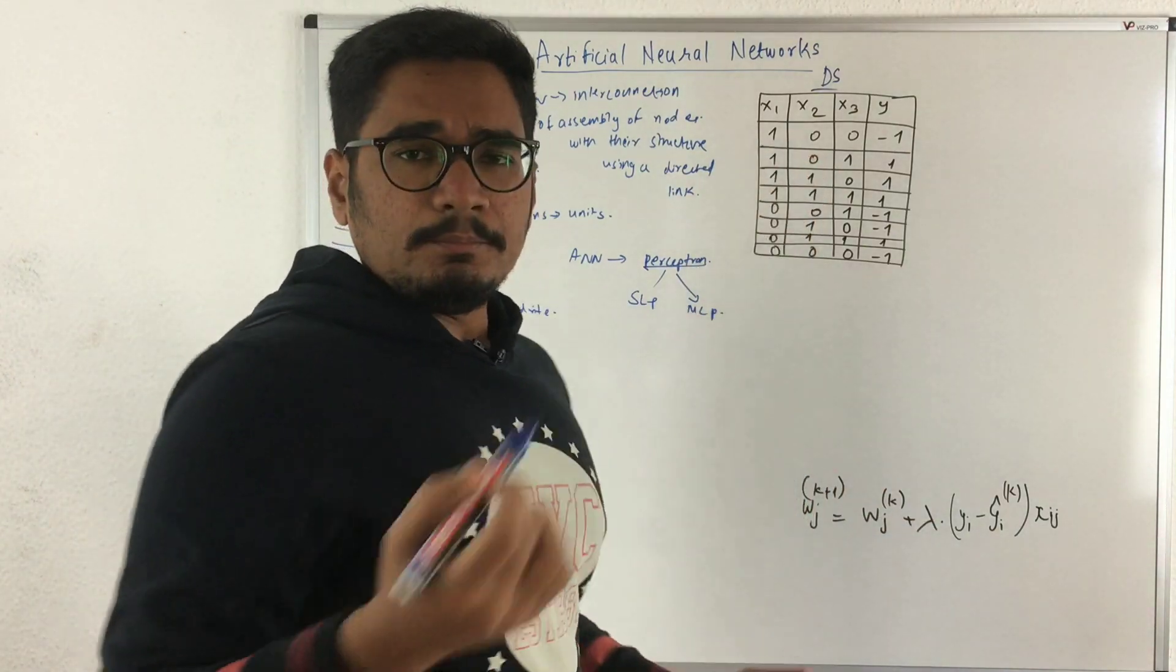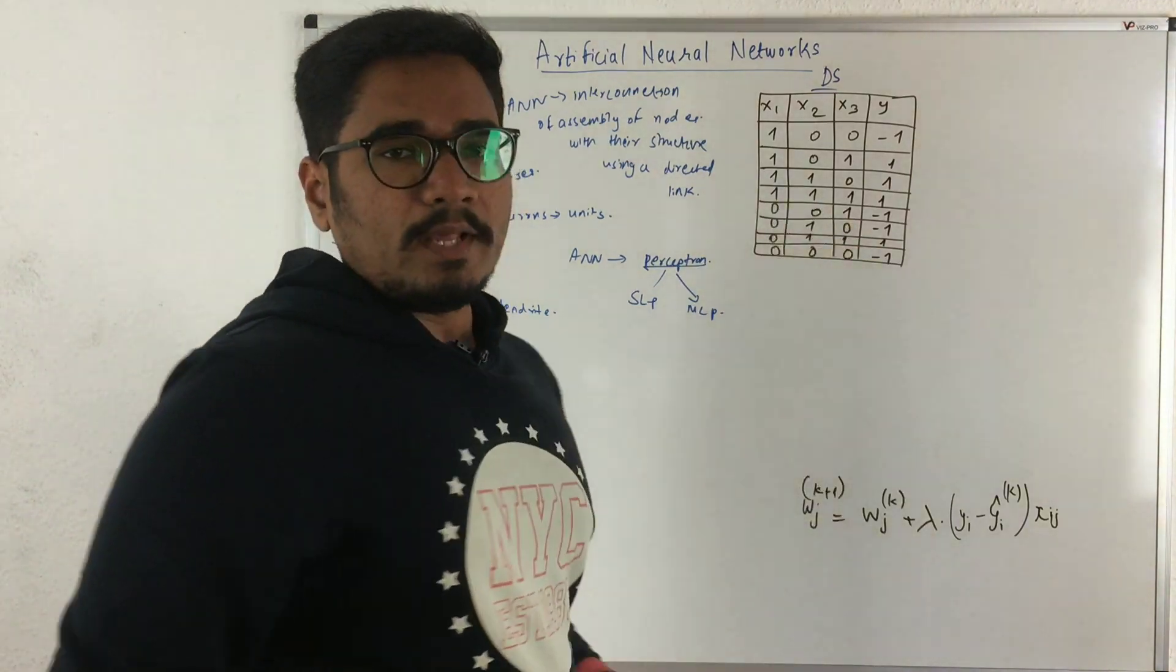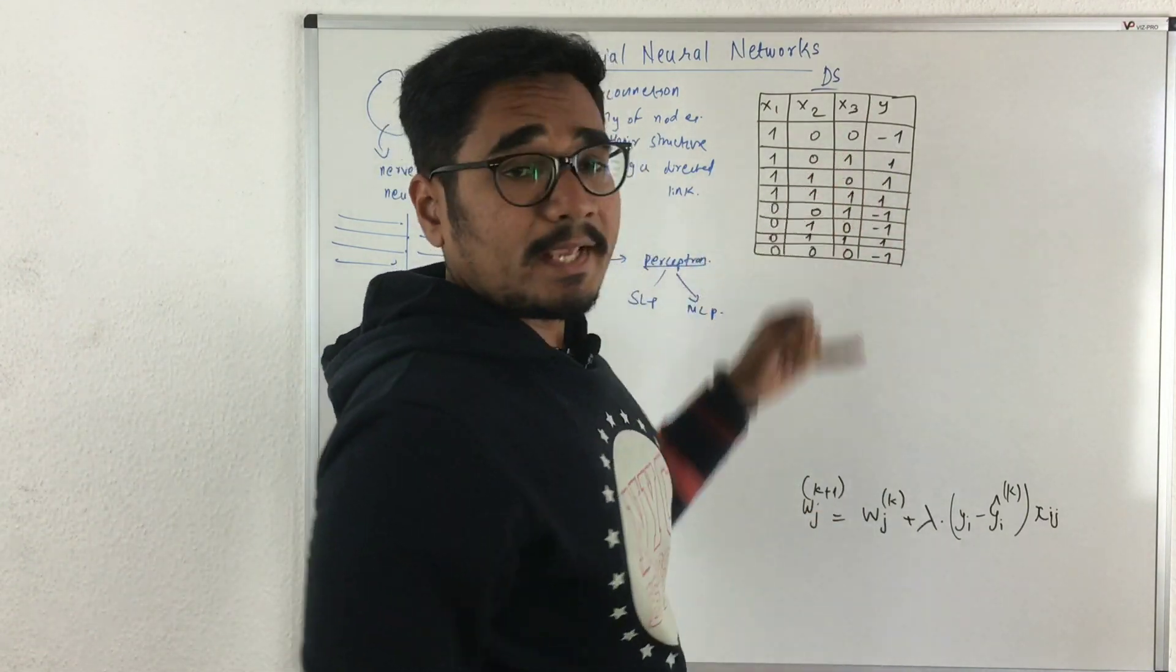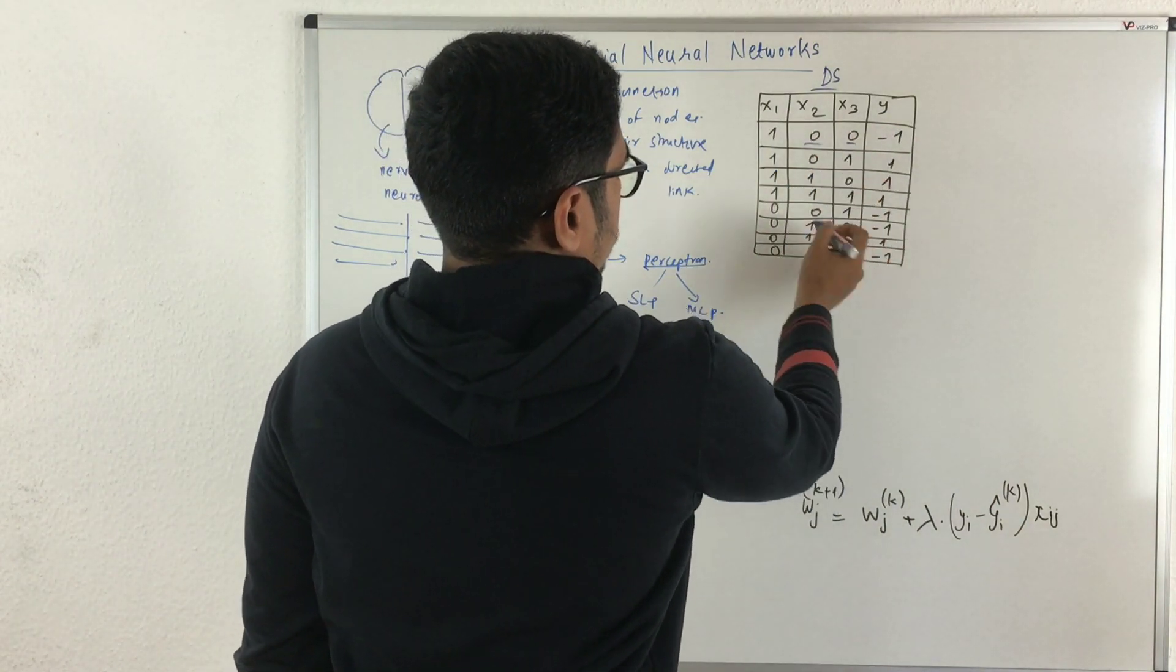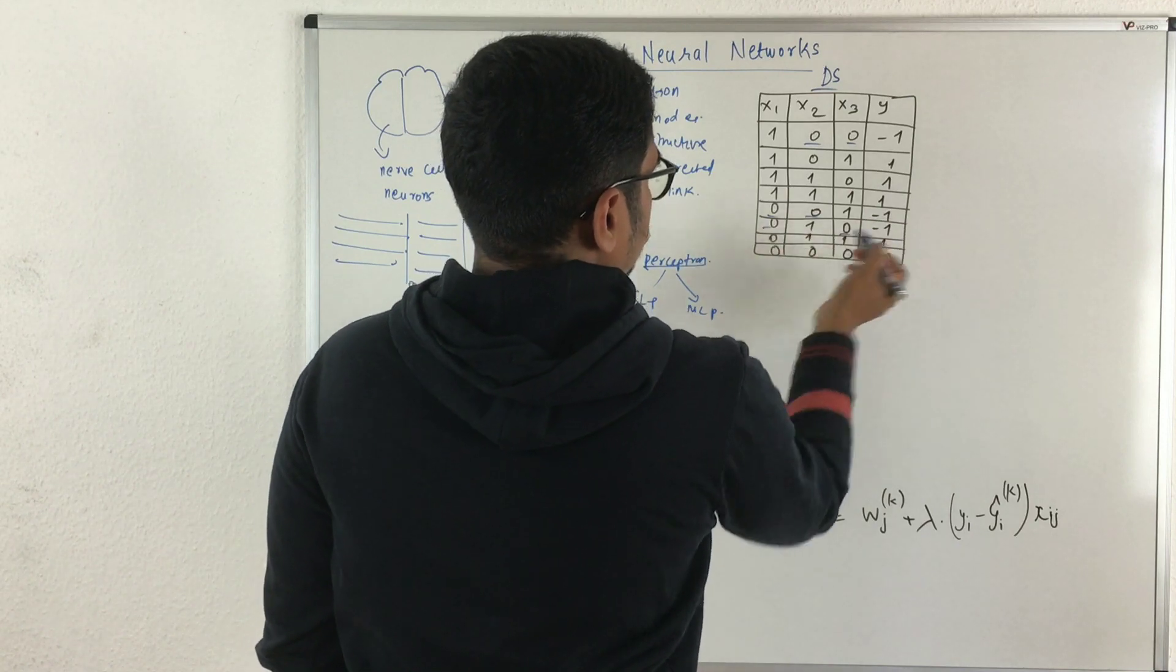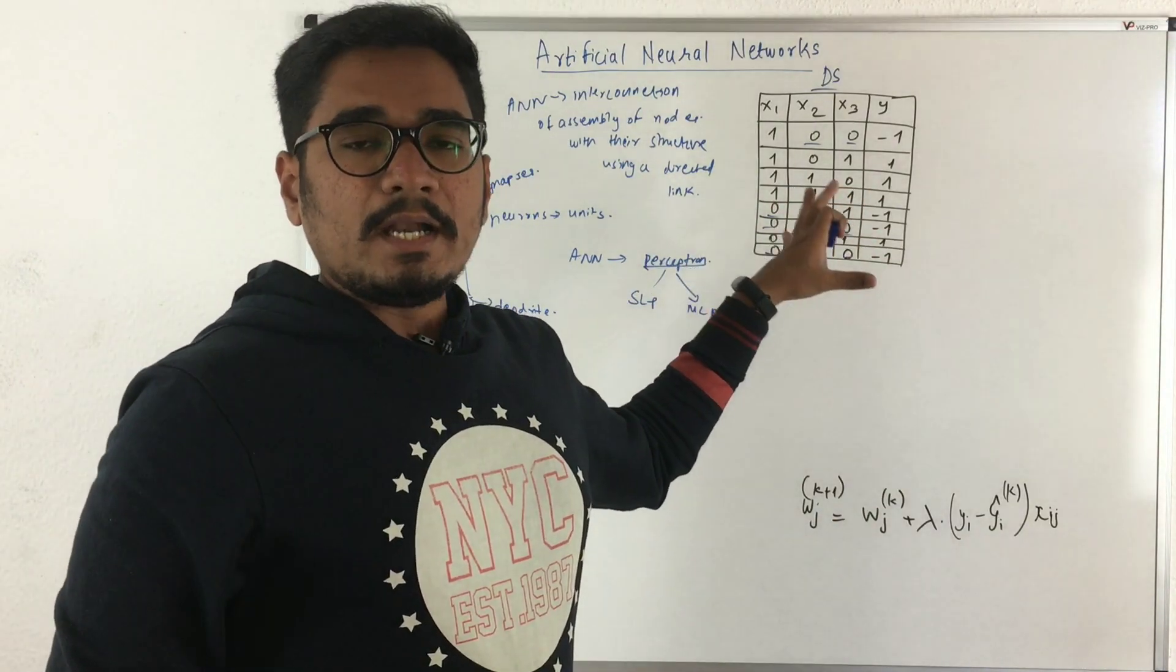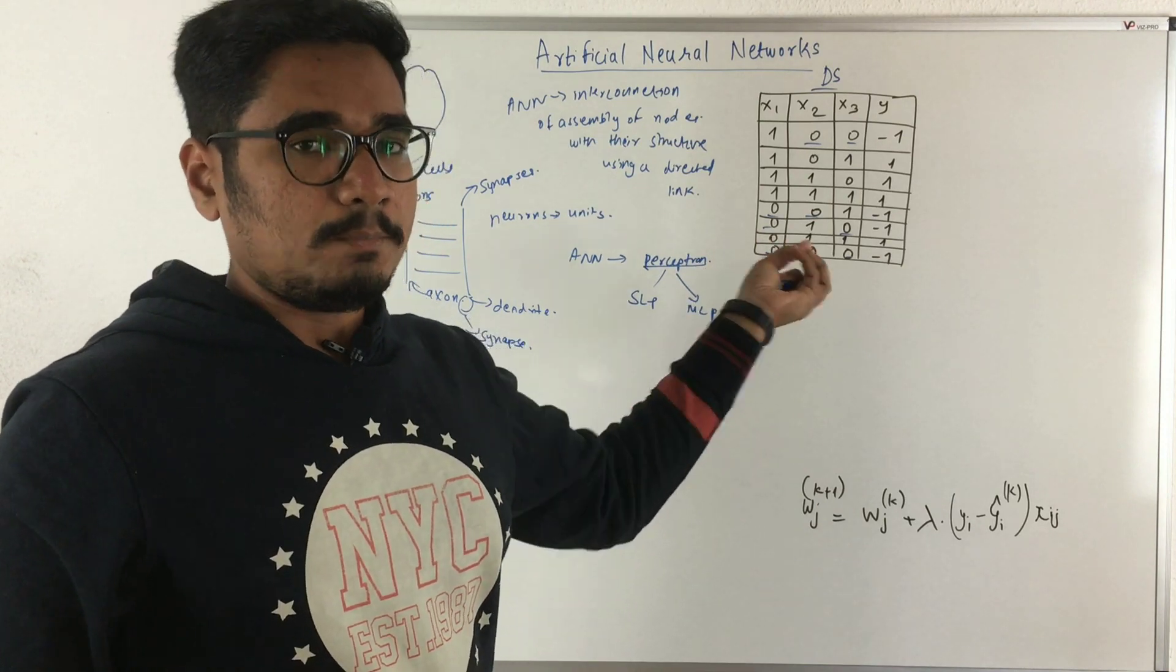Assume this is a boolean dataset that takes two values, one and zero. The output at y class is minus one. The output can only be minus one if it has at least two zeros. Whenever you see two zeros it's minus one; here you can see three zeros, that is minus one. Now let us construct an artificial neural network, basically a simple perceptron model, with the help of this dataset.